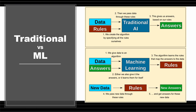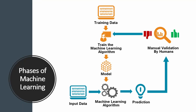In the traditional way, you provide your data with some logical rules, and based on that the machine handles it and sends back the output. But in machine learning, you provide your data and expected output, so the machine trains itself and creates its own rules. Whenever you give new data, those trained model rules are applied to produce the output.